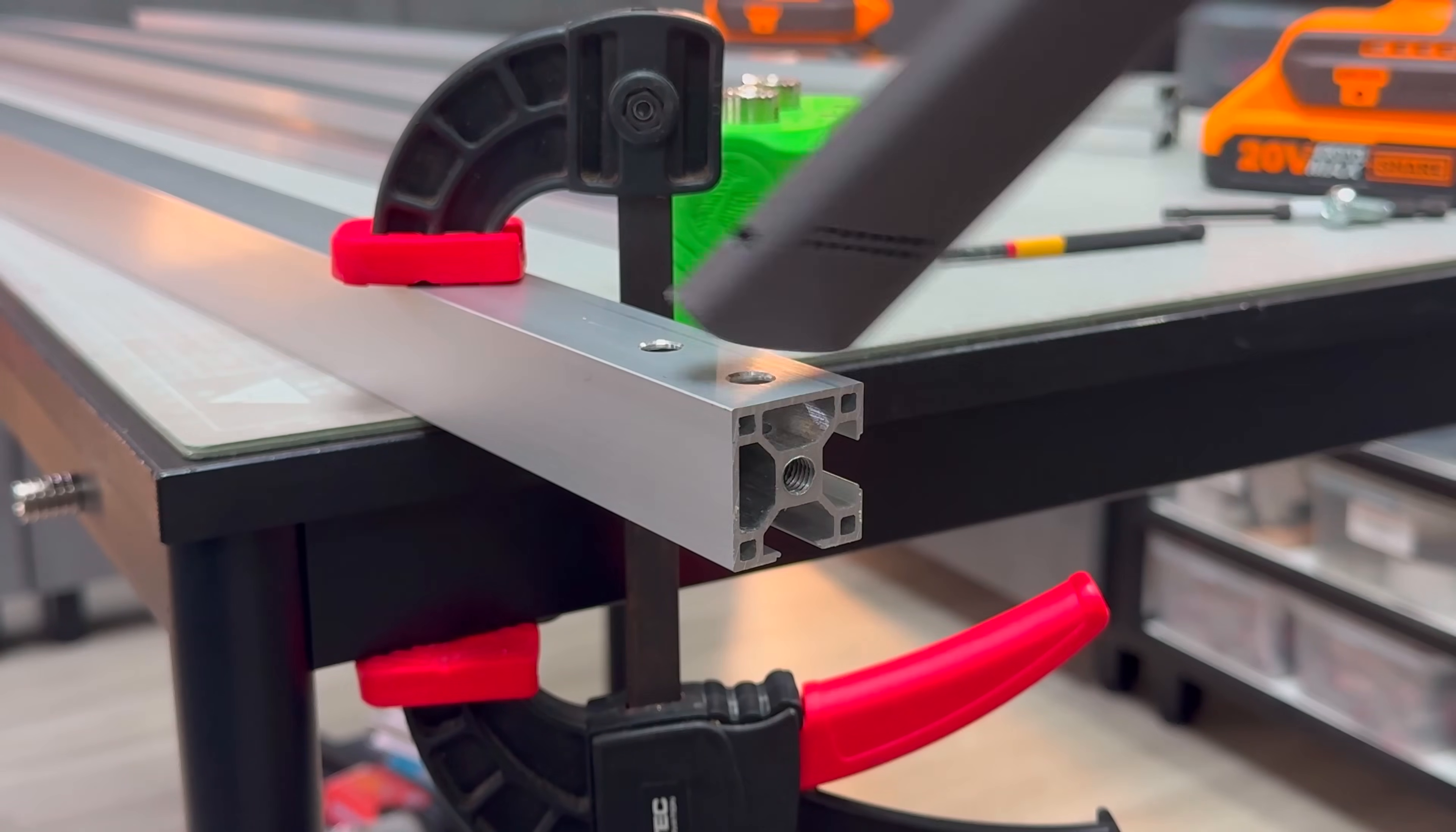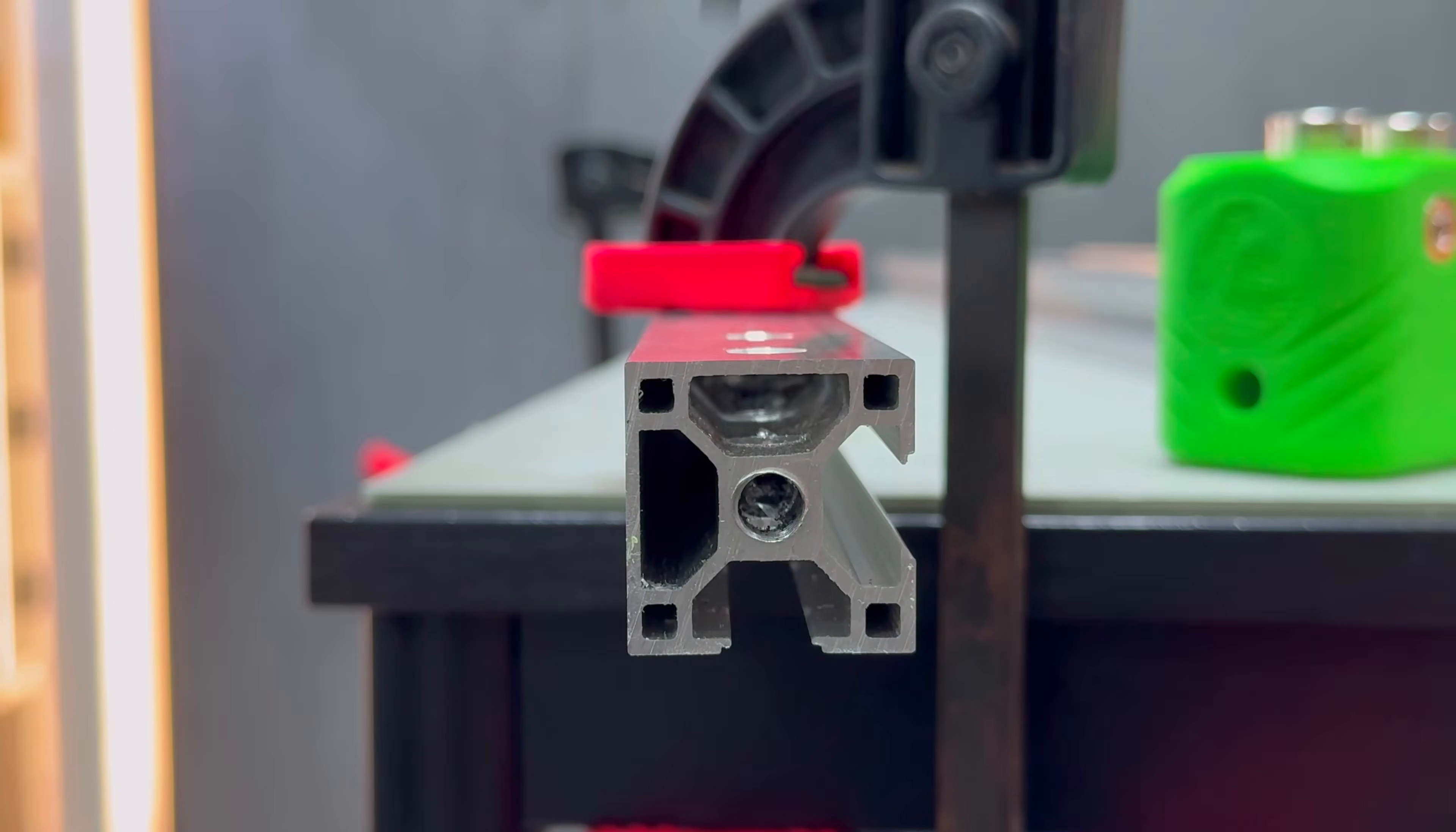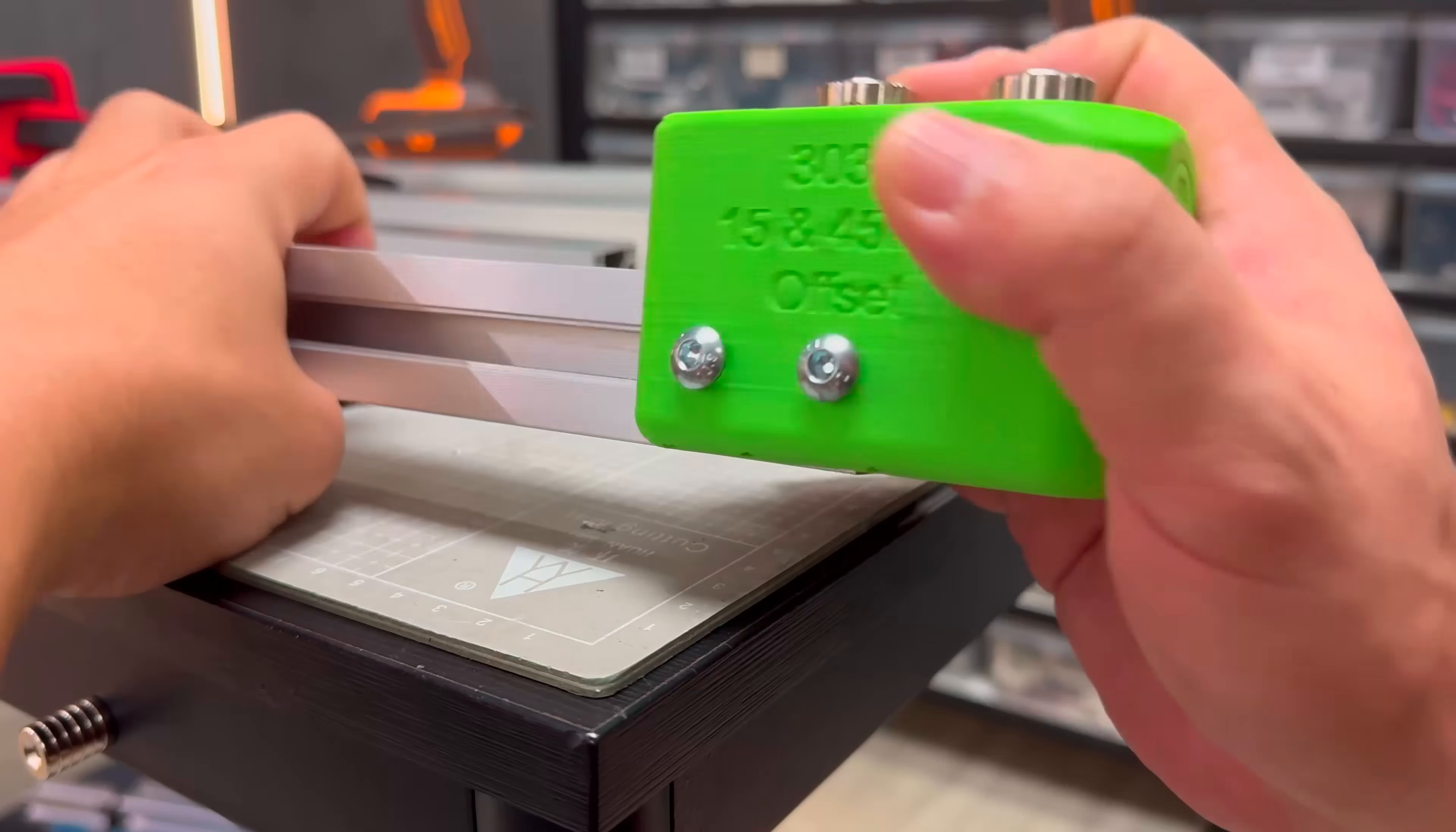A blind joint refers to fastening with internal screws or bolts that remain completely hidden within the joint's structure. To use blind joints throughout this table, we'll also need to drill the adjacent face of each aluminum profile.